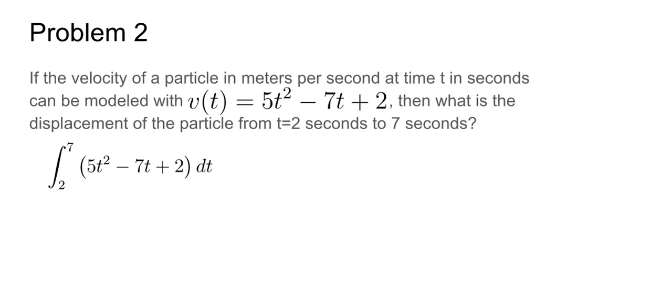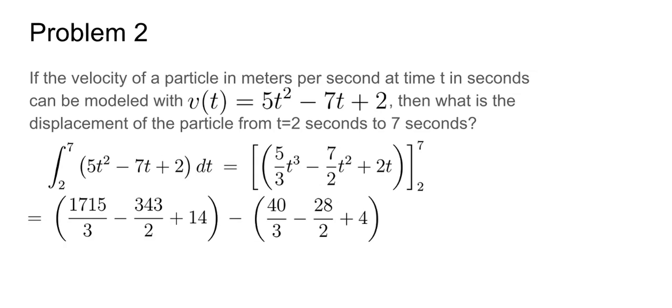Next, we find the antiderivative of v(t), which is 5/3 t cubed minus 7/2 t squared plus 2t, and we evaluate between the endpoints. So we would get the quantity 1715/3 minus 343/2 plus 14 minus the quantity 40/3 minus 28/2 plus 4. Evaluating each of the parts gives us 2485/6 minus 20/6 to get our final answer of 2465/6 meters.